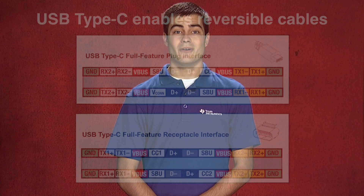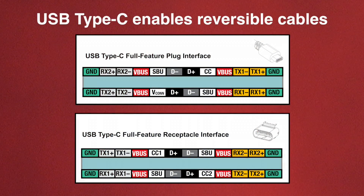The same trick is played with the USB 2.0 signals, only here we see that there are twice as many pins as really necessary to achieve the symmetry. For USB 2.0, you just wire the two together — D-plus to D-plus and D-minus to D-minus. This creates a short stub. Stubs are okay for low-speed signals, but they won't work for high-speed signals such as video.